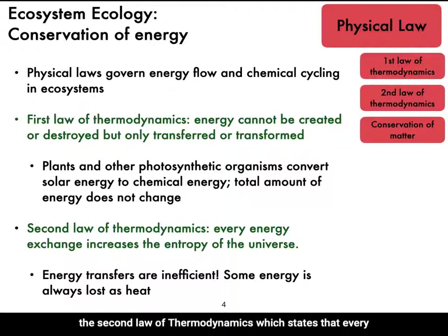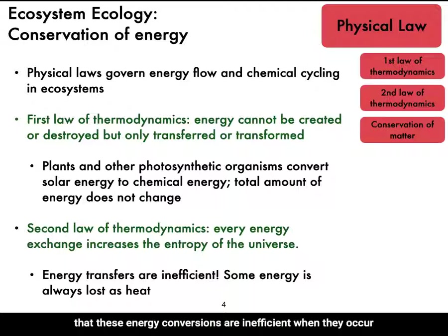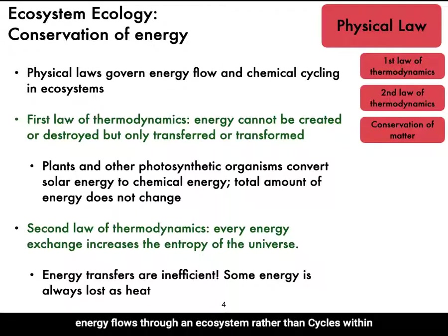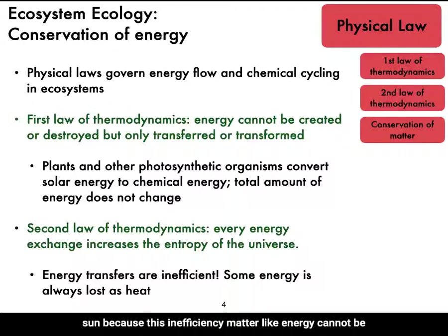The second law of thermodynamics, which states that every energy exchange increases the entropy of the universe, implies that these energy conversions are inefficient. When they occur, some energy is always lost as heat. That is precisely why energy flows through an ecosystem rather than cycles within it. Ecosystems need a continuous source of energy from the sun because of this inefficiency.